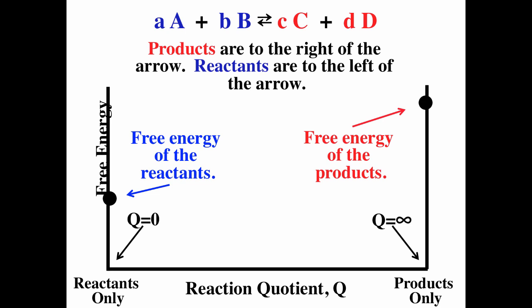For a reaction, the products are always defined as what's on the right and the reactants as what's on the left. Notice the double arrows, meaning the reaction can go forward or reverse. Even when the reaction is going in reverse, what's on the right is still called products and what's on the left is still called reactants. On the plot, Gibbs free energy is on the y-axis and the reaction quotient Q is on the x-axis, used to monitor the reaction.